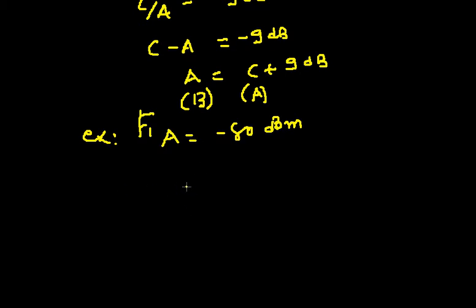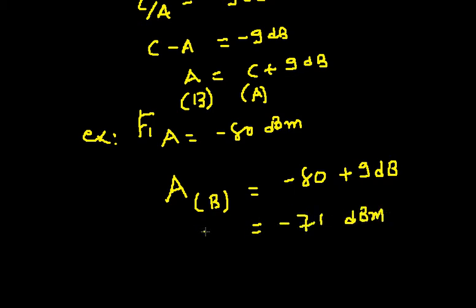This is F1 frequency from Cell A. Let's find out what we are supposed to get from B at that location. The adjacent channel level of B should be minus 80 plus 9 dB, so that is minus 71 dBm.